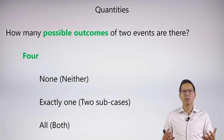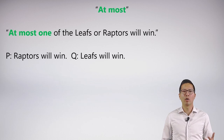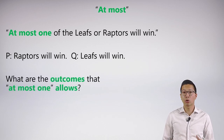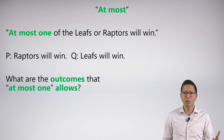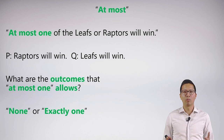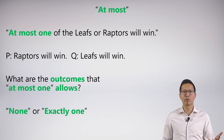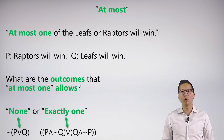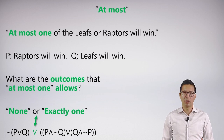There are other ways to express quantities in English. 'At most one' is a really common one. How do I say 'at most one of the Leafs or the Raptors will win'? I just break it down in terms of outcomes — at most one means it's possible that none of them win or exactly one of them wins. Once we write it out this way, we already know how to symbolize both of those things, and since it's an 'or' situation, we just put a disjunction in the middle.